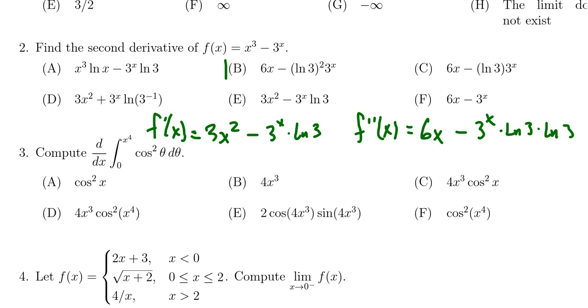And so this leads us to select choice B as the correct answer: 6x minus the natural log of 3 squared times 3^x.